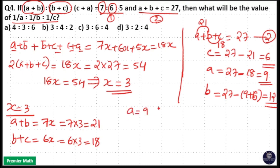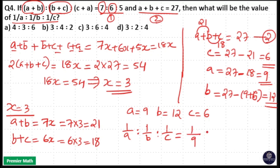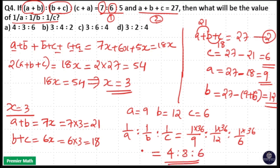So 1/a : 1/b : 1/c = 1/9 : 1/12 : 1/6. Taking the LCM, which is 36, multiply each term: 36/9 = 4, 36/12 = 3, 36/6 = 6. So the answer is 4:3:6, which is option A.